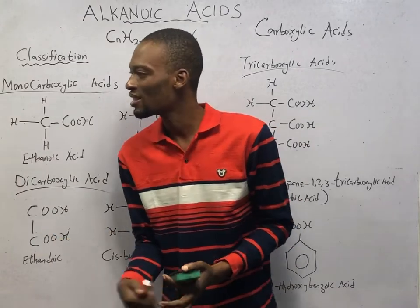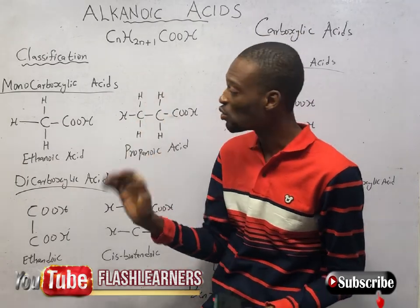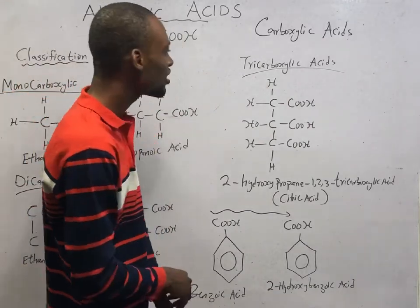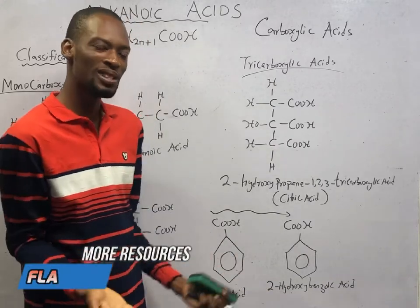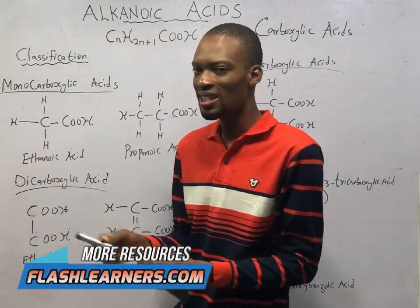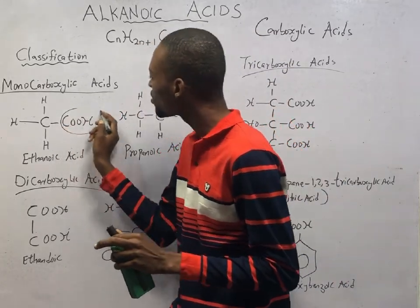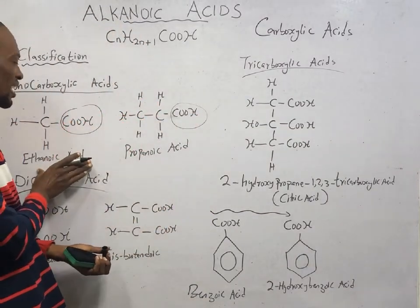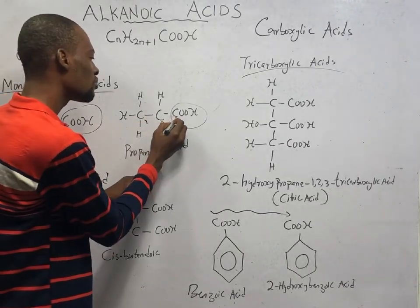Back to carboxylic acids. Based on the number of carboxyl groups (COOH), a carboxylic acid can be monocarboxylic acid, dicarboxylic acid, or tricarboxylic acid — and in fact, you may have polycarboxylic acids. A monocarboxylic acid possesses just one COOH group. Examples: ethanoic acid (2 carbons) and propanoic acid (3 carbons) each have only one COOH group.